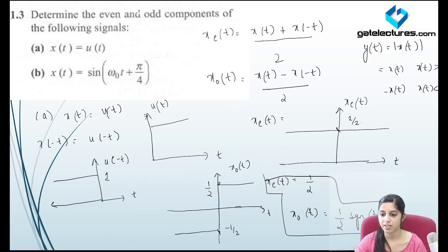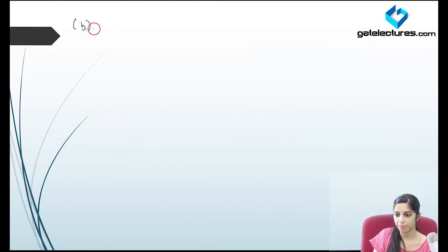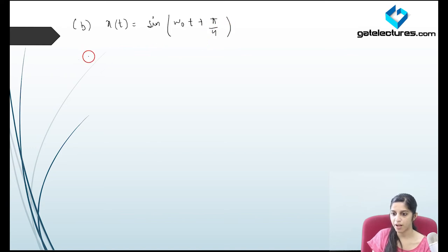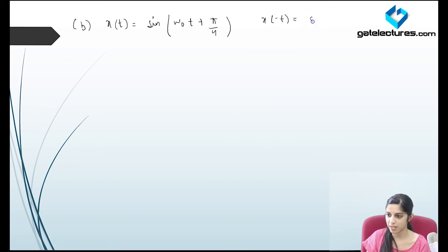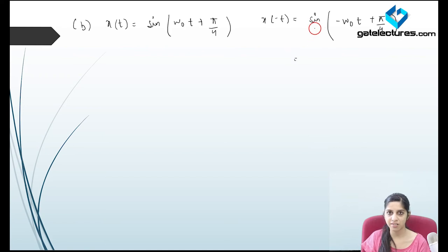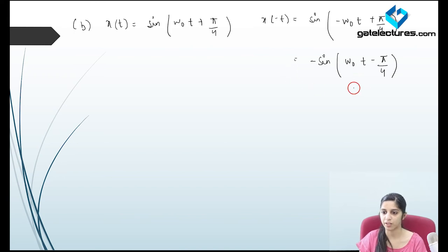Now look at the second part: x(t) is sine(omega_0 t + pi/4). If I find the time-reversed form x(minus t), replacing t with minus t gives sine(minus omega_0 t + pi/4). Since sine is an odd function, taking the minus sign outside gives minus sine(omega_0 t minus pi/4). Using the sine addition identity, x(t) expands to sine(omega_0 t)cos(pi/4) plus cos(omega_0 t)sin(pi/4), and x(minus t) becomes sine(omega_0 t)cos(pi/4) minus cos(omega_0 t)sin(pi/4). Since sin(pi/4) and cos(pi/4) equal 1/root 2.